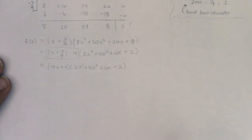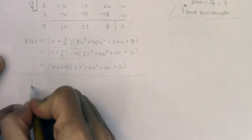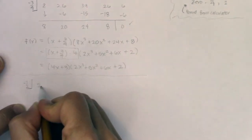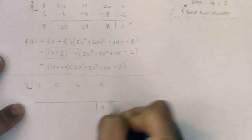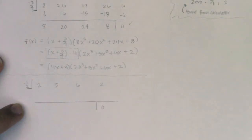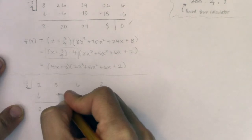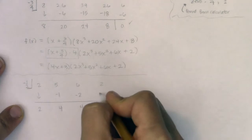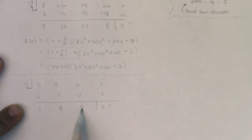I know negative one half is another zero. Let me draw another separator and put negative one half in the house. The coefficients are two, five, six, and two. I should be getting a zero here — we already saw that play out on the calculator. Two comes down. Negative one half times two is negative one — this is four. Negative two. This is four. Negative two. And sure enough, it's zero. And take note — look at these numbers: two, four, and four. They have something in common — we're going to be factoring out yet another thing.